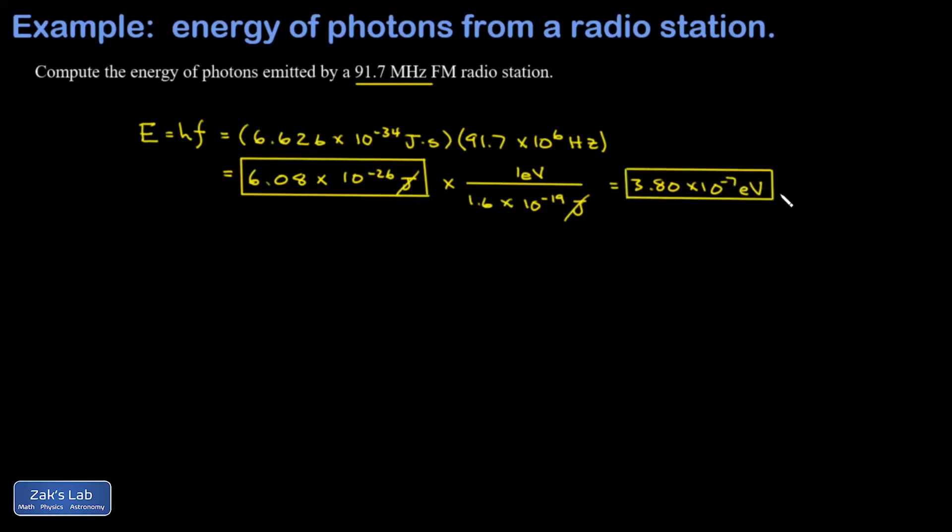When you realize that visible photons typically have energies of a handful of electron volts, and you look at this energy of 10^-7 electron volts, that's a dramatic reminder of how low energy radio waves really are compared to visible photons.